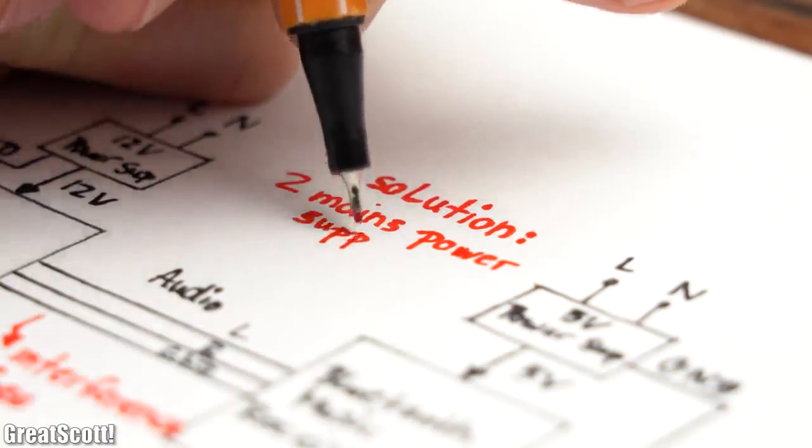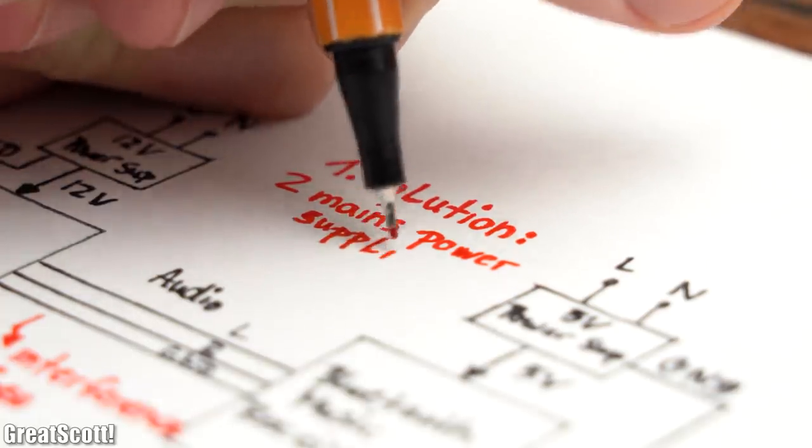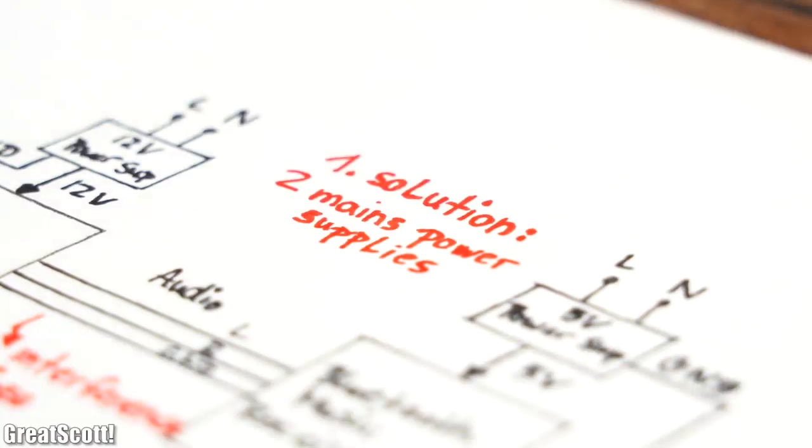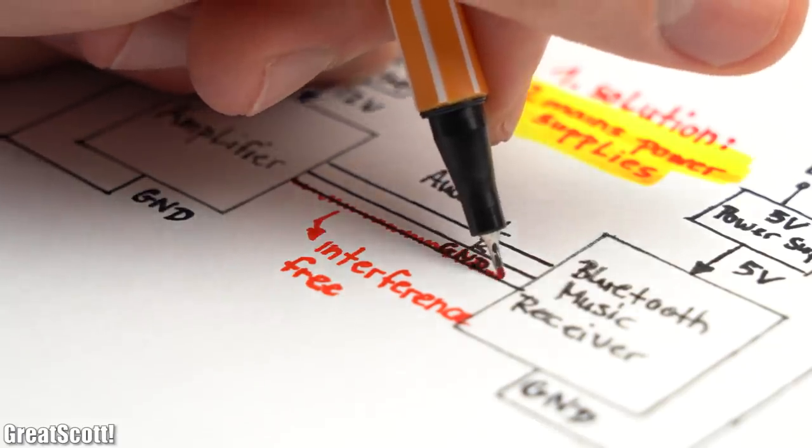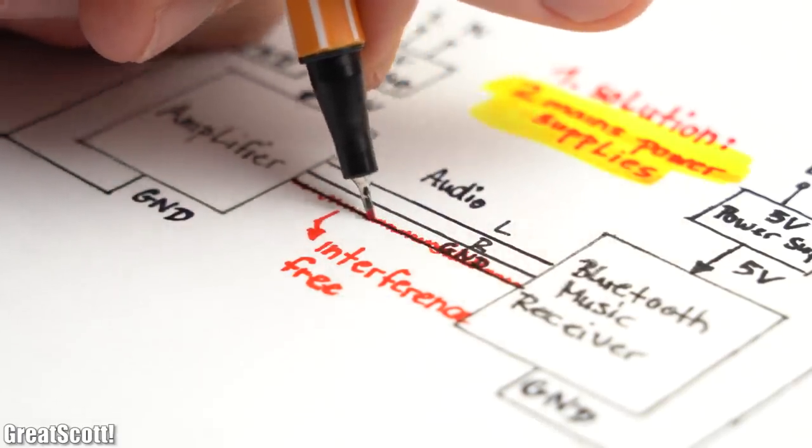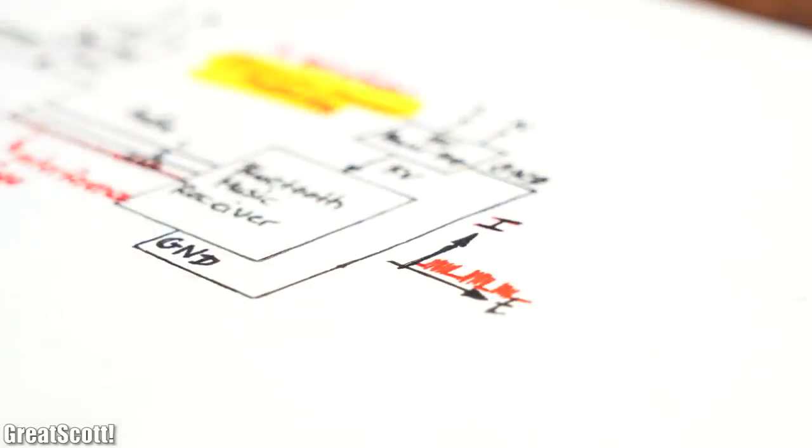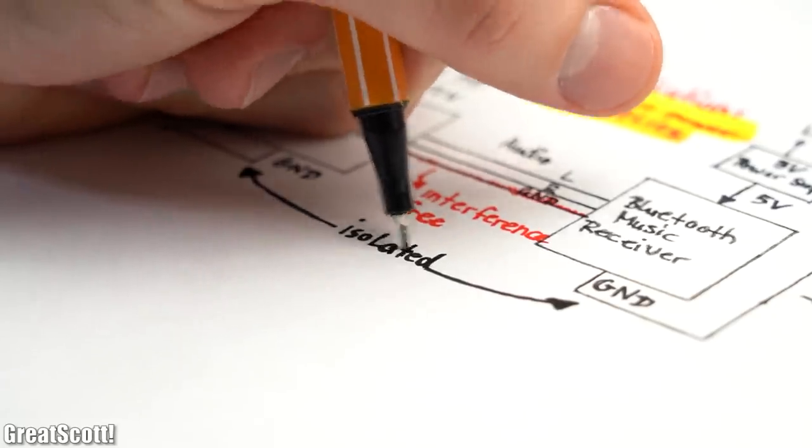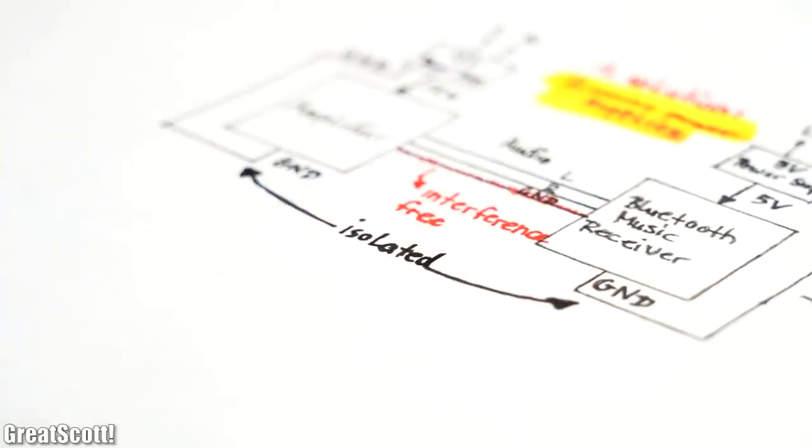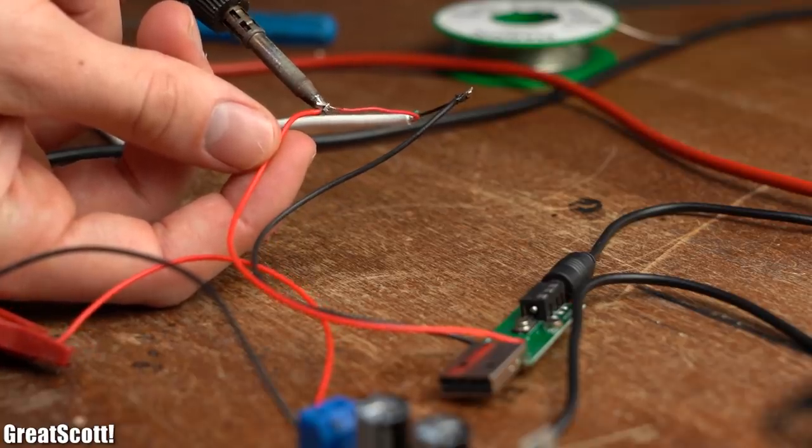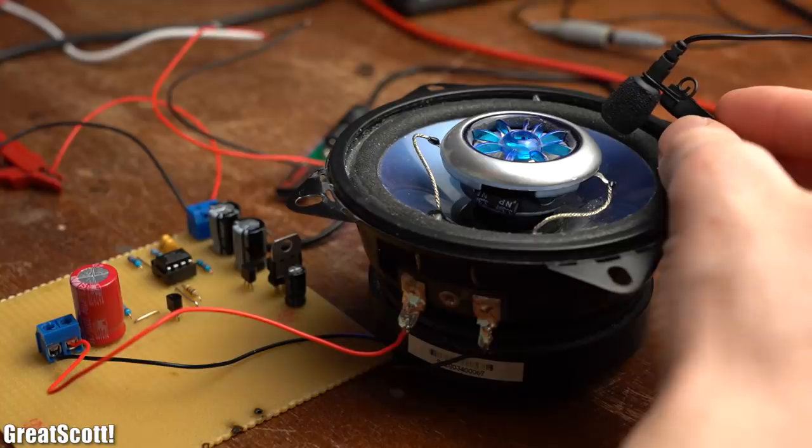So the first proper solution to this problem is, like earlier mentioned, by using two mains power supplies. This way there is only a ground connection through the audio cable, but all the noise-creating currents are kept away from the amplifier because the power grounds are isolated from one another. I actually built up such a two mains power supply circuit once again in order to let you hear that it surely does solve the problem.